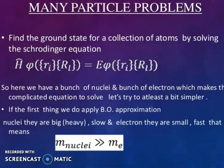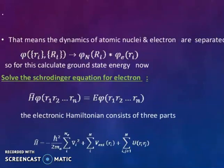Nuclei are big, heavy, slow, and electrons are small, fast. That means m nuclei is much greater than m electron. That means the dynamics of atomic nuclei and electrons are separated. So phi(ri, rI) = phi_n(rI) * phi_e(ri). For this, calculate ground state energy. Now solve the Schrödinger equation for electrons. The electronic Hamiltonian consists of three parts: the first part, the second part, and third part.